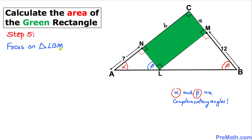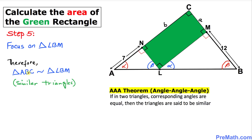Now let's focus on triangle LBM. As we can see, this angle is 90 degrees and this angle is beta, so the remaining angle must be the complement of beta. Since alpha and beta are complementary, this angle has got to be alpha.